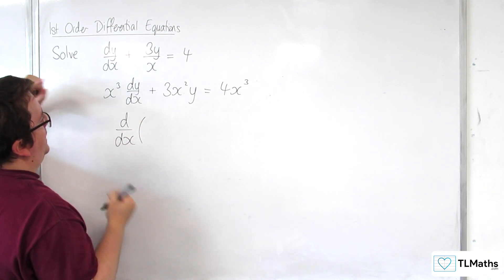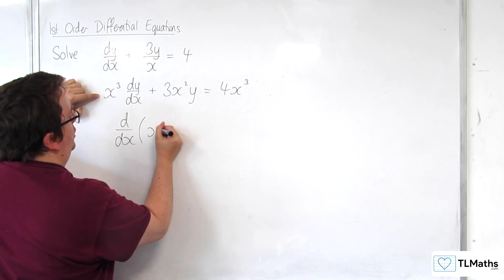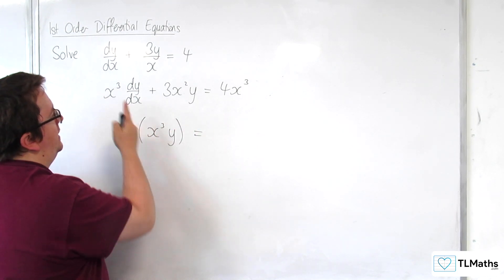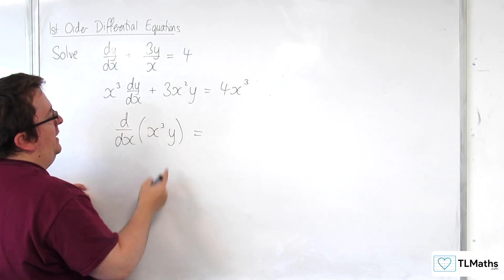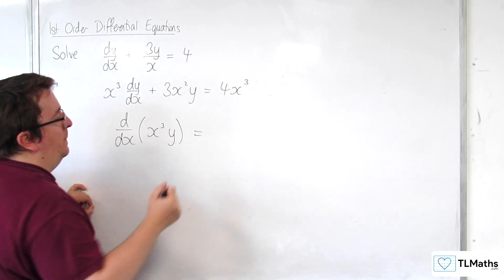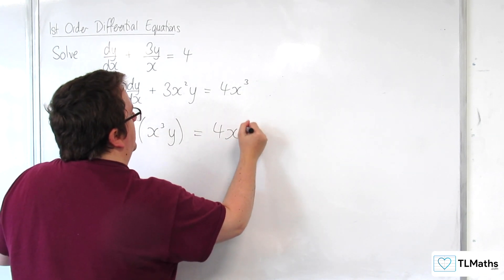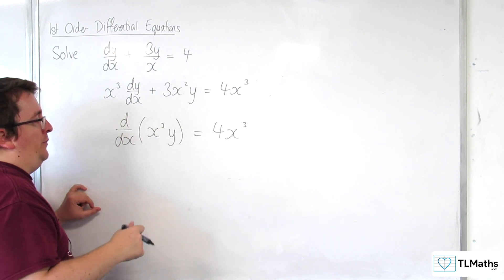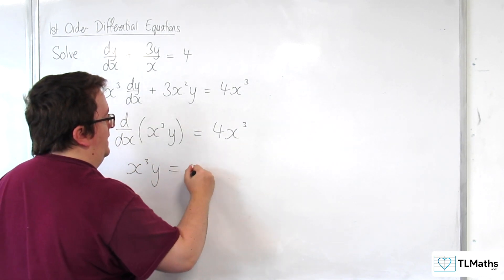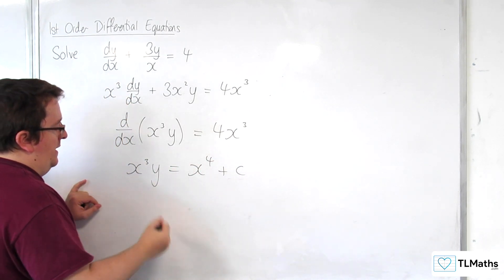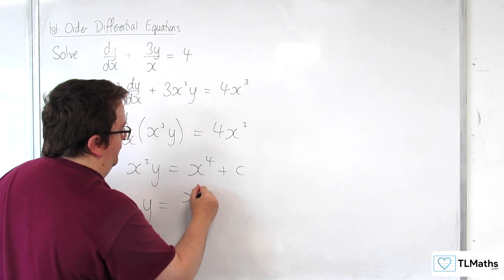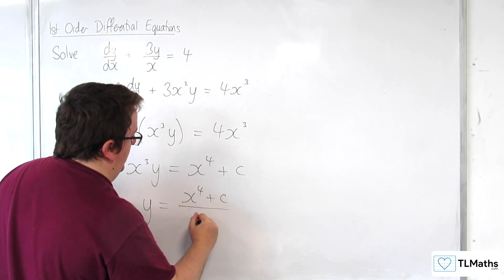You can see that the left-hand side is actually d/dx of x cubed times y. Because x cubed times the derivative of y is x cubed dy/dx, and y times the derivative of x cubed is 3x squared y. We've got 4x cubed on the right-hand side. When we integrate both sides, we get x cubed y is equal to x to the 4 plus some constant c.